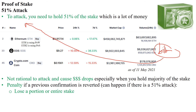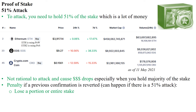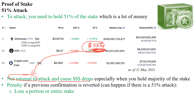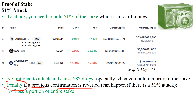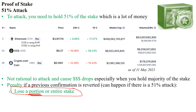You would need to put in money to have a higher chance to be chosen as a validator. Even if you had hundreds of billions of US dollars and wanted to be an attacker, it would not be rational — attacking the network would cause the value of your own holdings to drop dramatically, perhaps from hundreds of billions to just one million. Additionally, there is a penalty called slashing: if a previous confirmation is reverted due to a 51% attack, validators lose a portion or their entire stake.